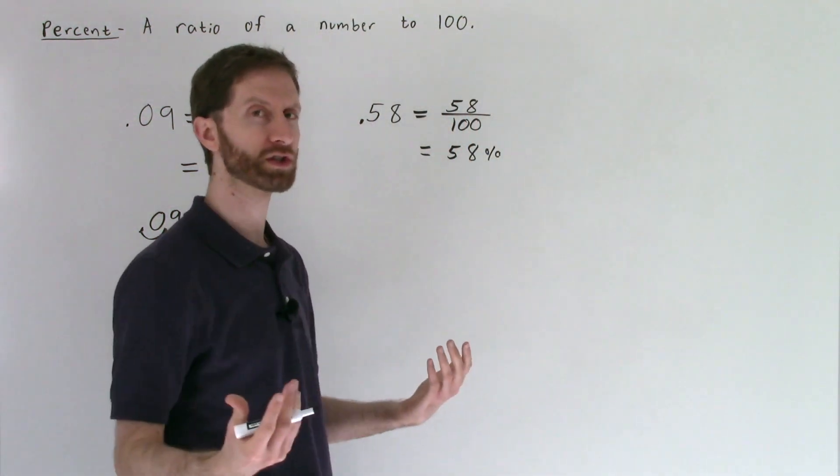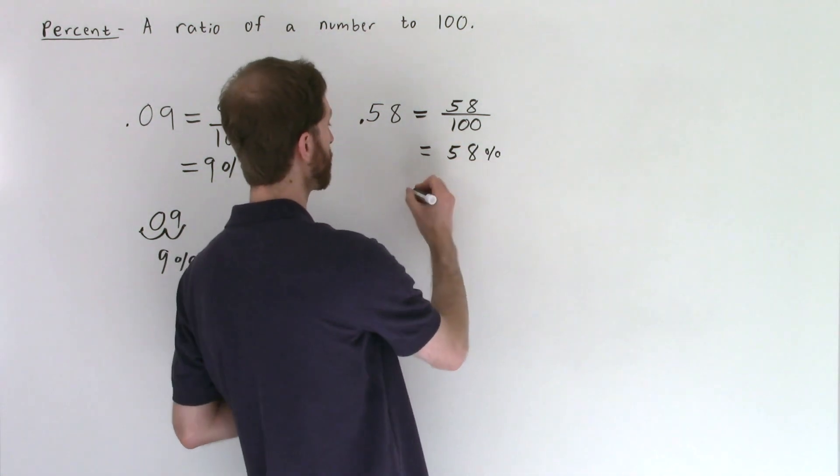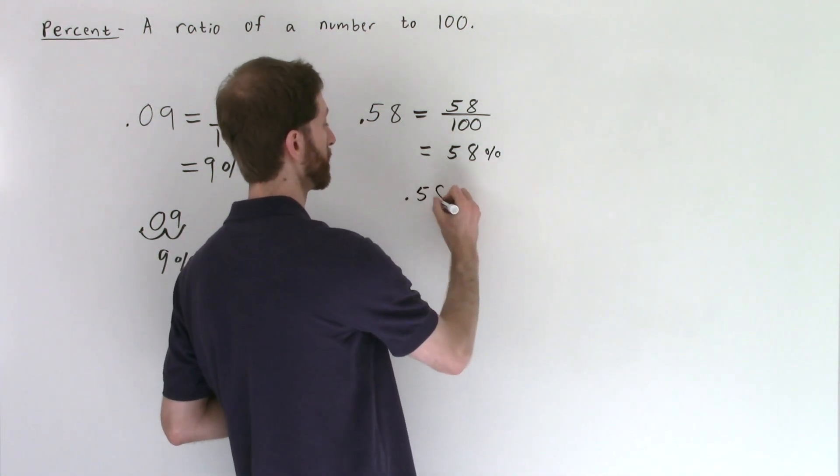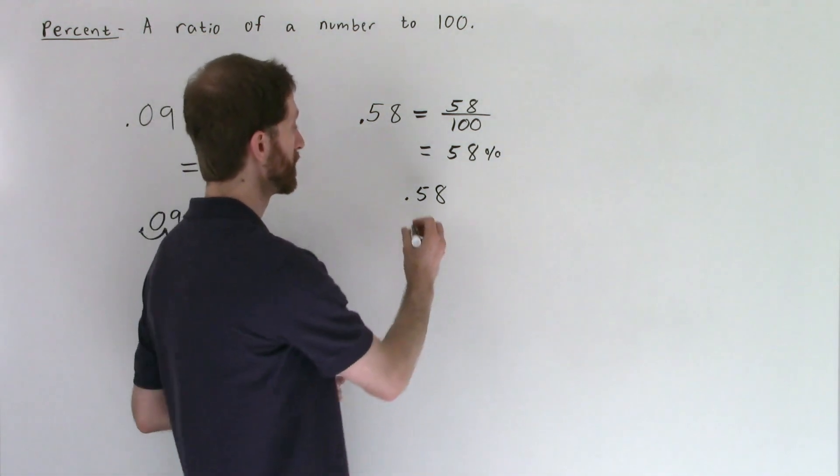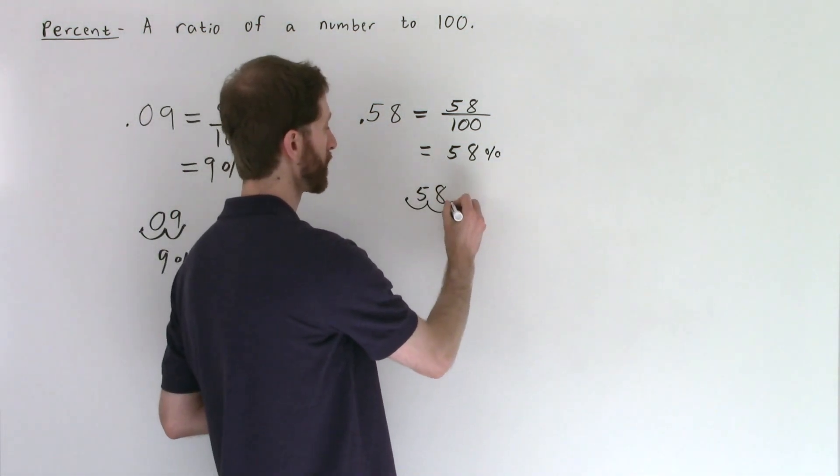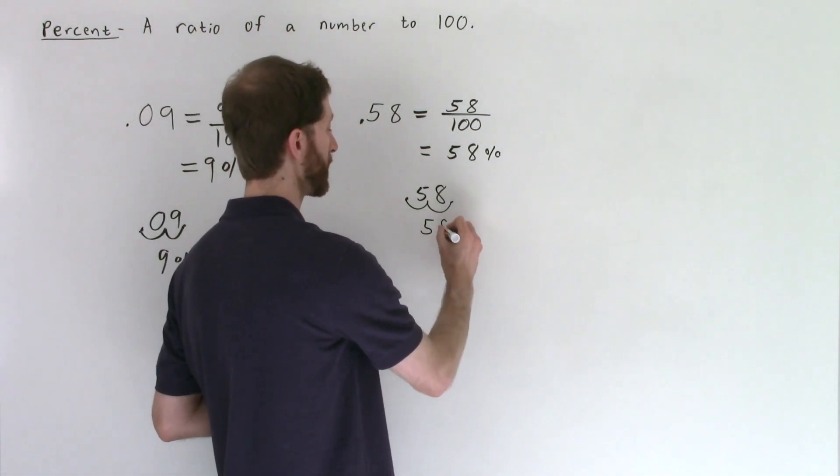We'll use that trick here too, though, just to show you how it works. So if I have .58 as my decimal and I want to convert it to a percent, you move the decimal place once, twice over to the right, and that gives you 58 percent.